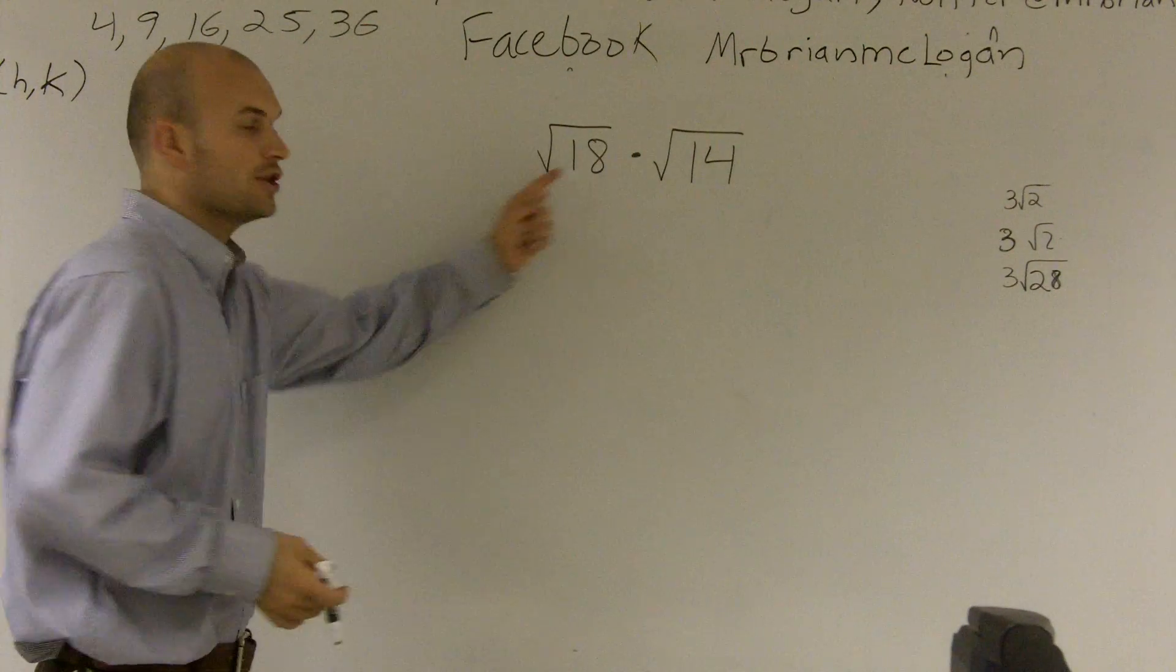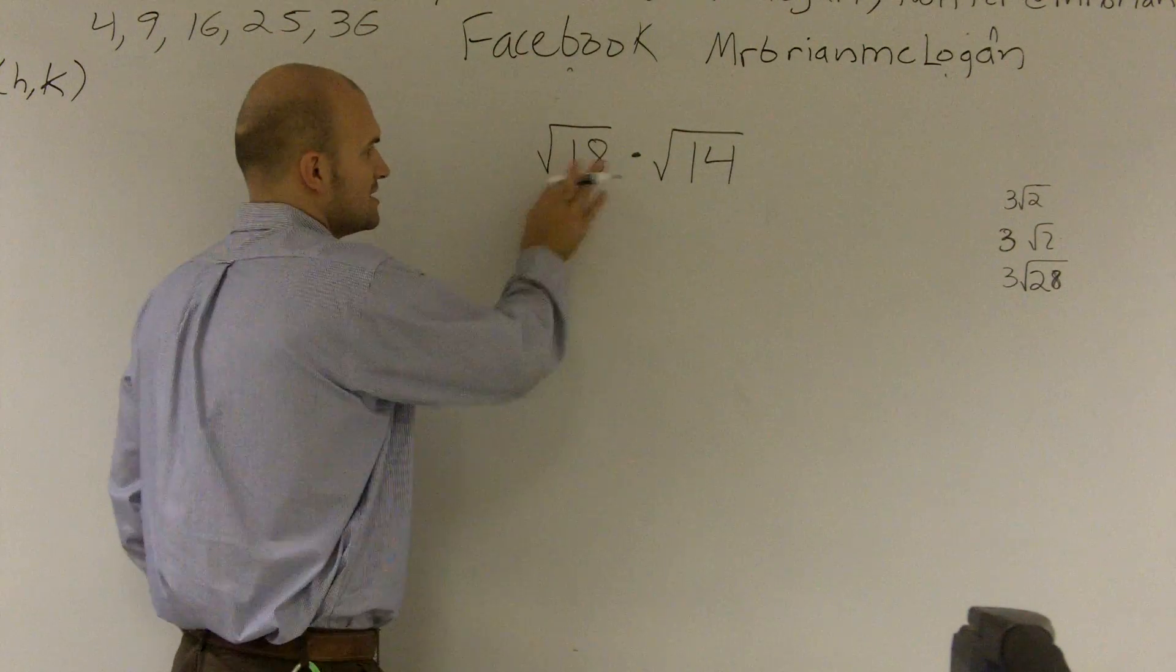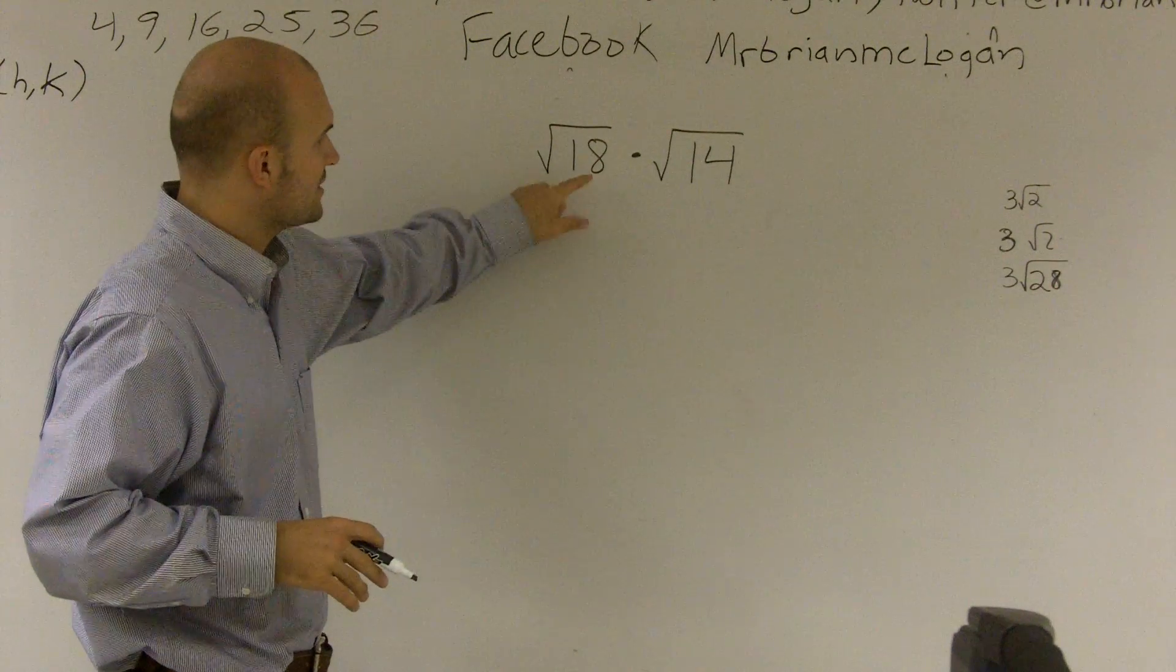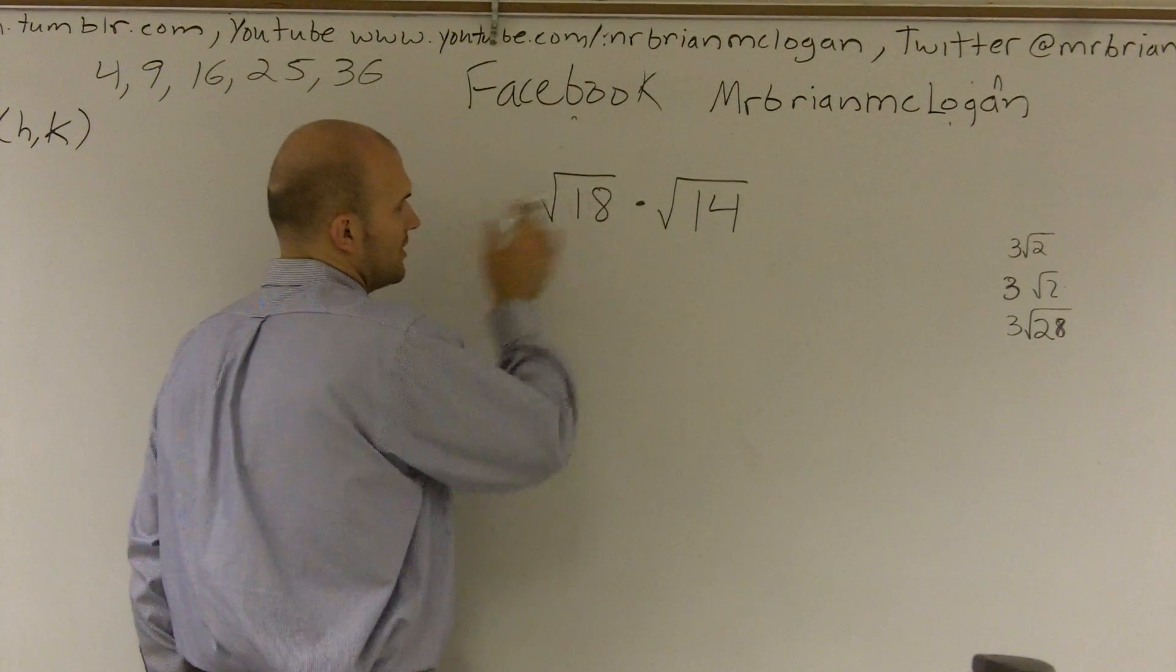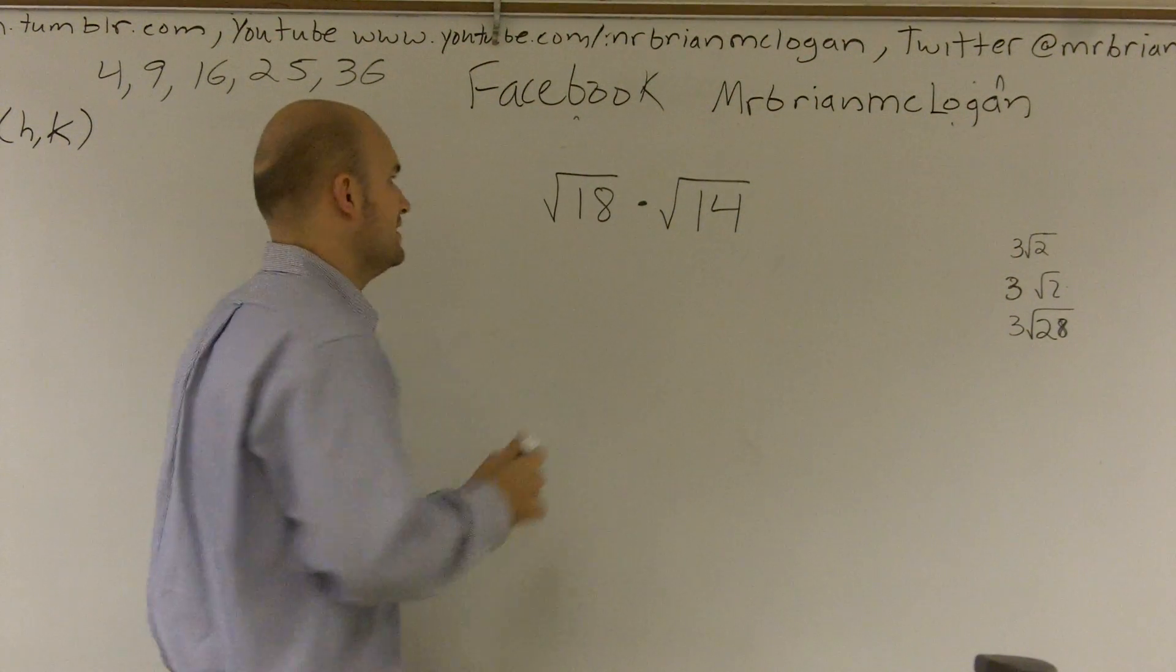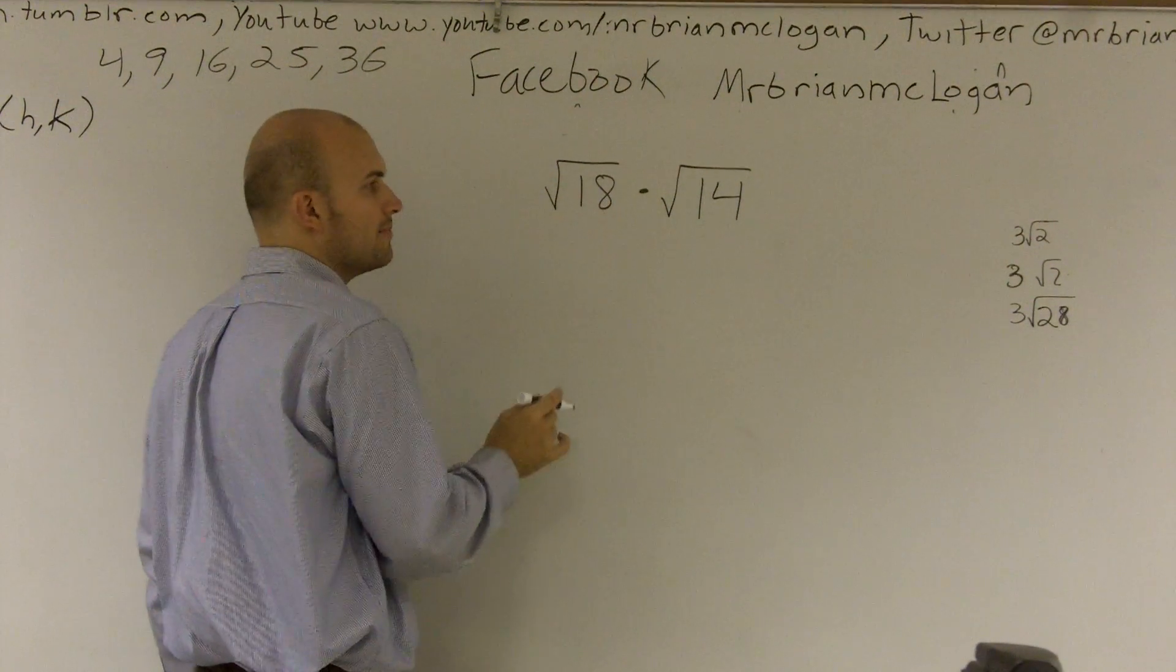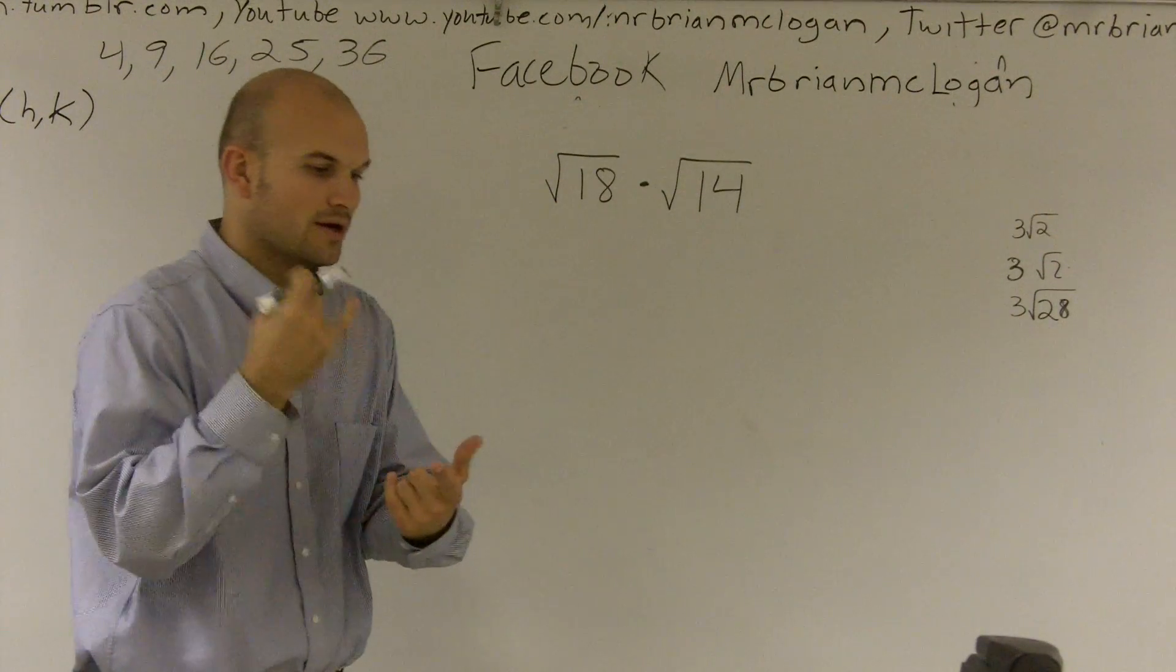So another way that we can do this and another way to simplify your radical is I'm going to look at simplifying both of these first and then multiplying them. So another way you can simplify radical 18 is I can say what is a square number? Remember, square numbers are 4, 9, 16, 25.